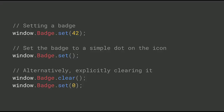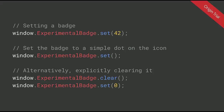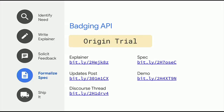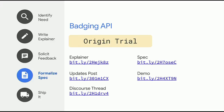Setting the badge is pretty easy — call window.badge.set. It takes an optional number; if you provide that number it uses that number, and if you don't provide a number, it just sets it with a dot. And then you can clear it with clear. It's available as an origin trial right now on Windows and Mac, and we're working on Chrome OS support. During the origin trial, you'll need to call window.experimentalbadge.set. If everything goes smoothly, this should be available and stable around Chrome 78. We're still looking for signs of public support — if this is something you think you might use, please tweet us or let us know.